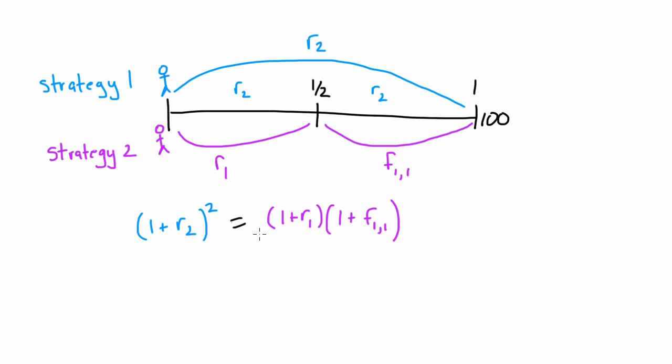Based on this relationship, sitting here today, we know what R2 is. We can see that today. We can go over to the Wall Street Journal and see whatever R2 is today. We can also go over to the Wall Street Journal and find out what R1 is today.